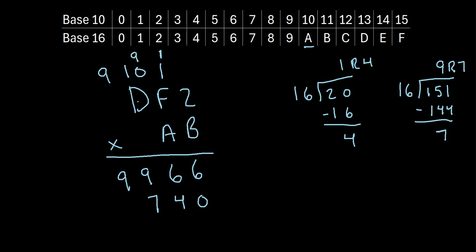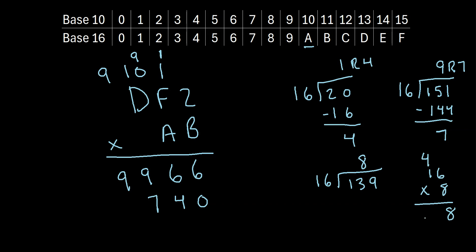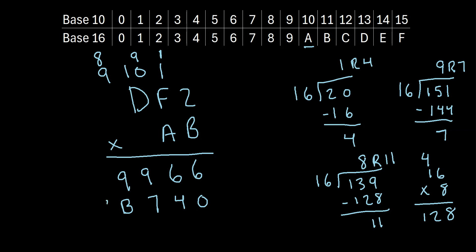Lastly, A times D plus 9. A is 10, D is 13, so 10 times 13 is 130, plus 9 is 139. How many 16s go into 139? 16 times 9 is 144, so that's too many. 16 times 8 is 128, and 139 minus 128 gives a remainder of 11. Remember, 11 is represented by B in hexadecimal, so we write B here. The whole number 8 carries to the next column, and since there's nothing left to multiply, the 8 comes straight down.